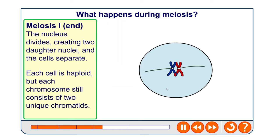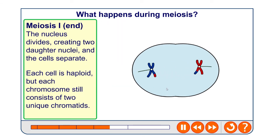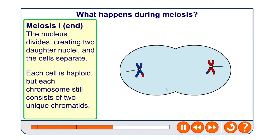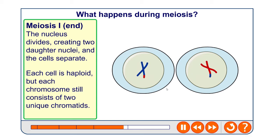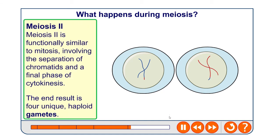At the end of meiosis one, the nucleus divides, creating two daughter nuclei, and the cells separate. Each cell is now haploid, but each chromosome still consists of two unique chromatids at this point — which is again a difference between meiosis one and mitosis.